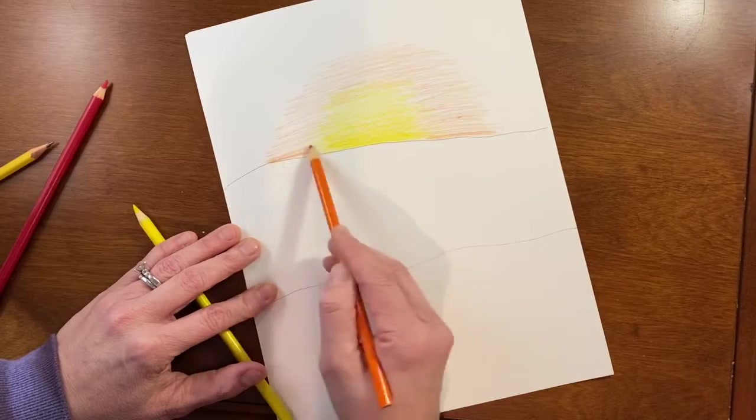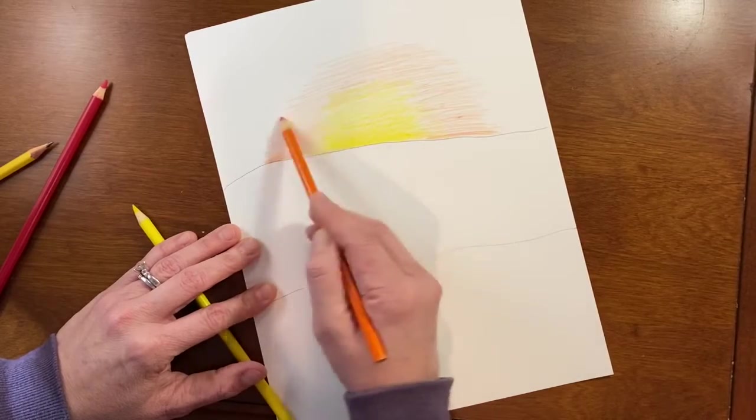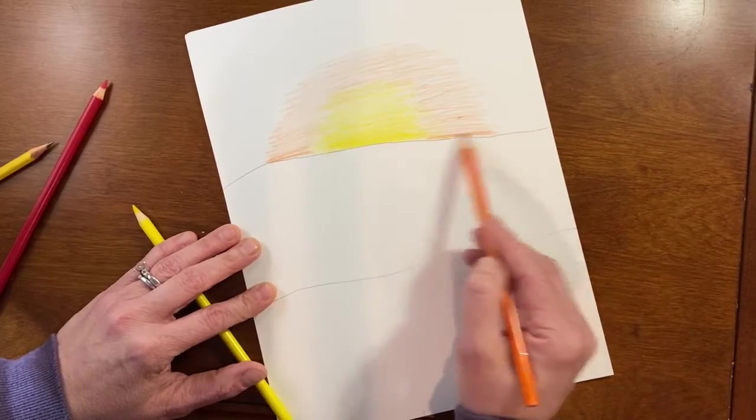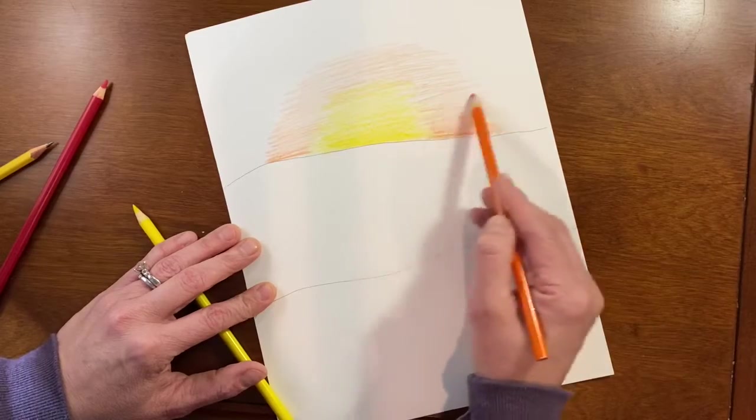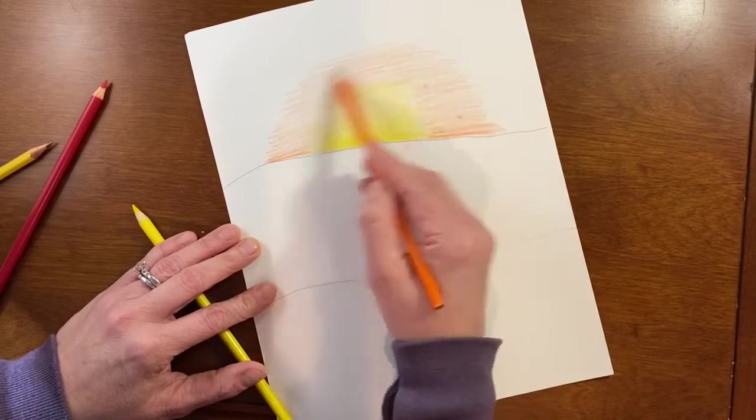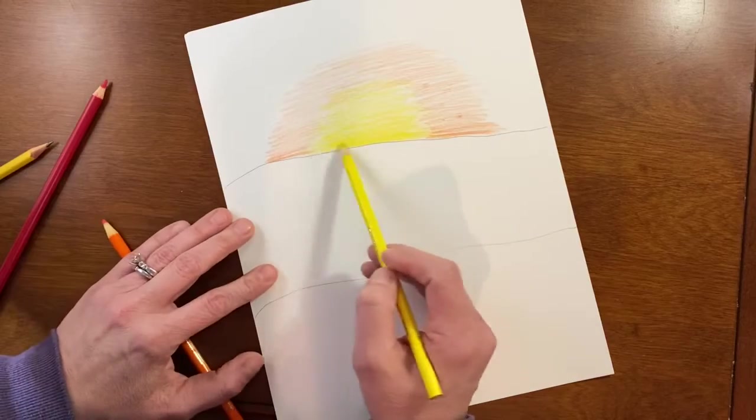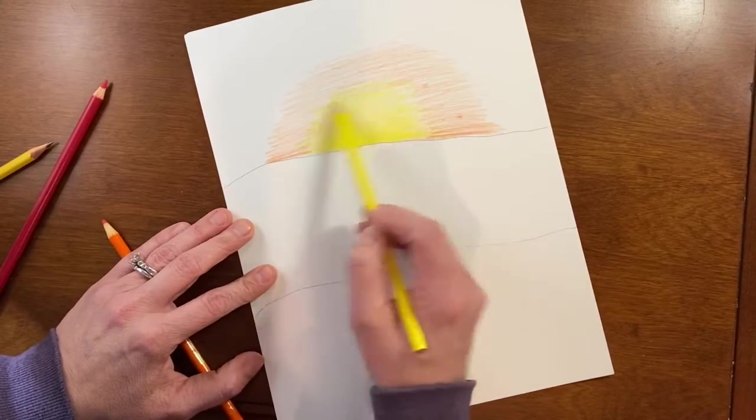I'm gonna again go darker at the bottom and then maybe go lighter as I go up, and I'm kind of blending that yellow edge into the orange edge. And if I want to add a little bit more yellow, I can always go back and do that.